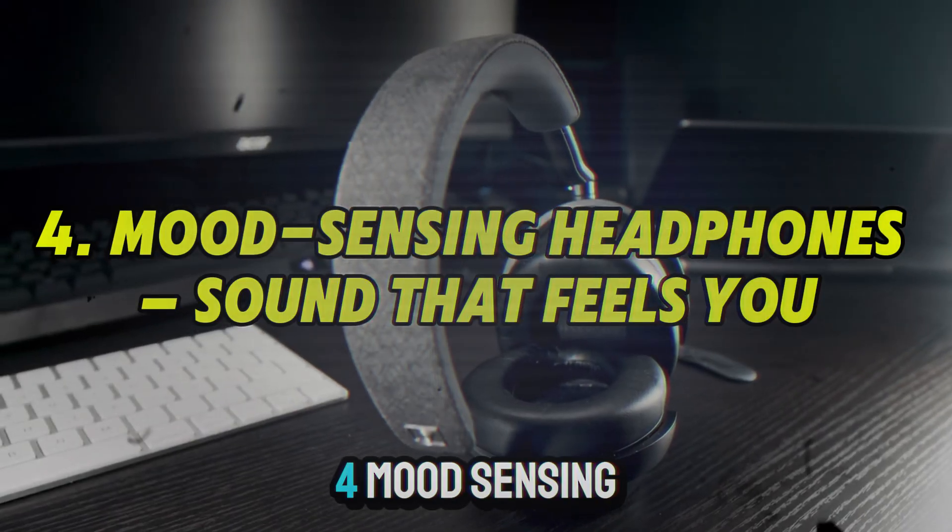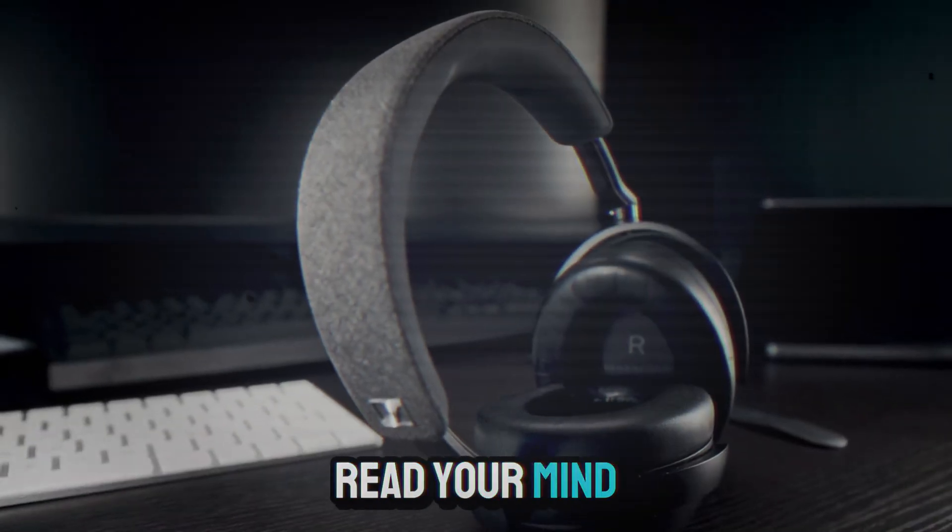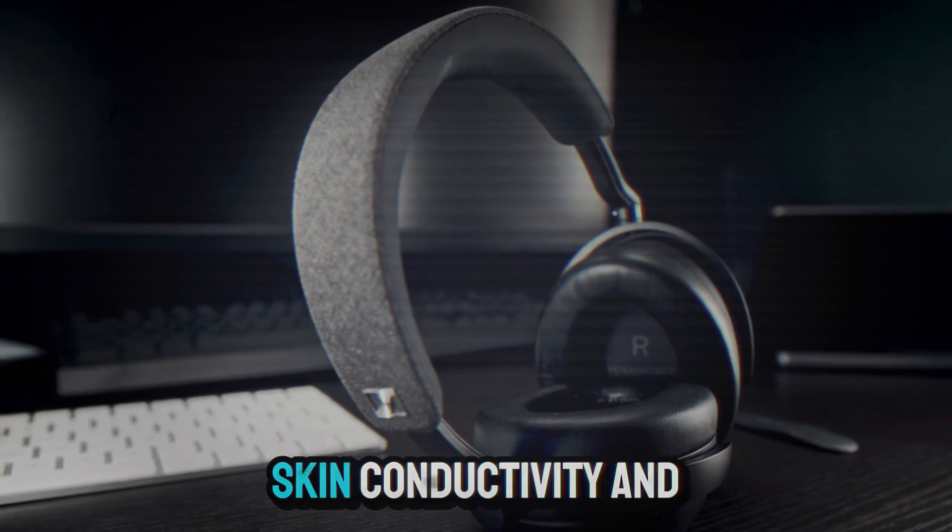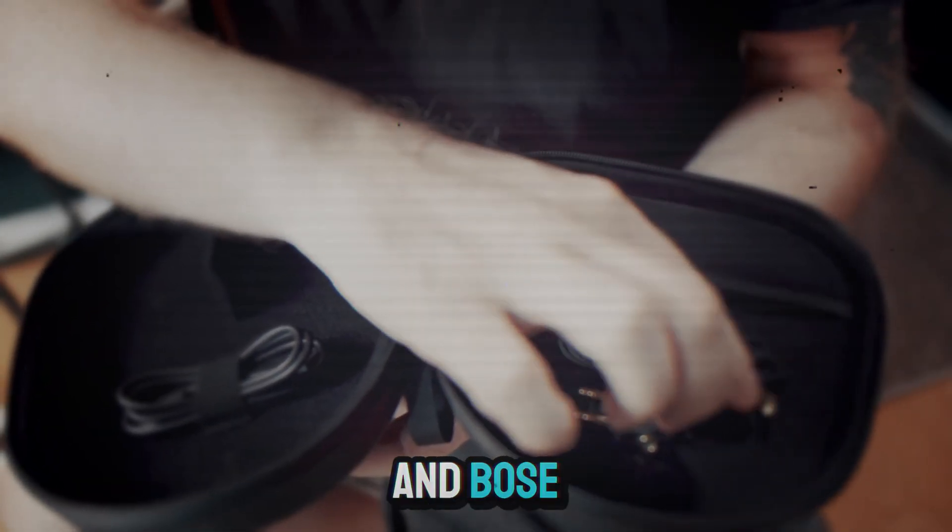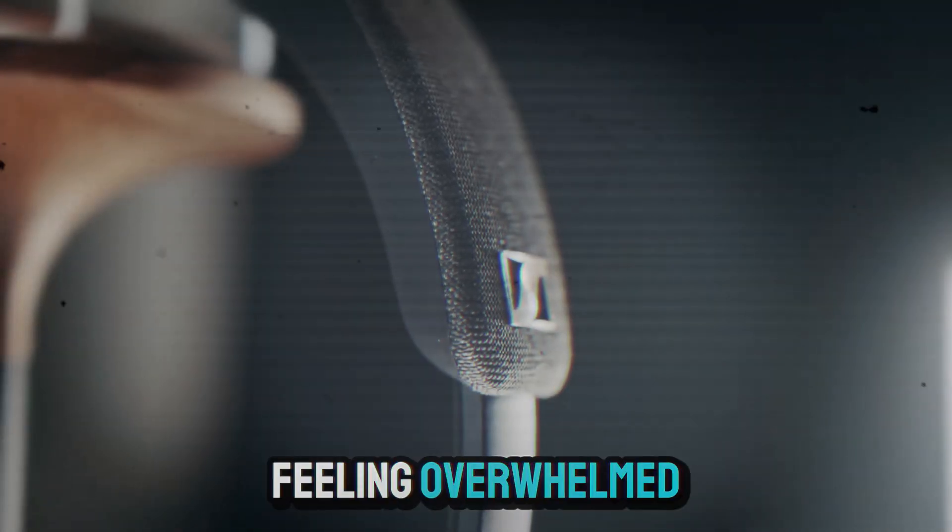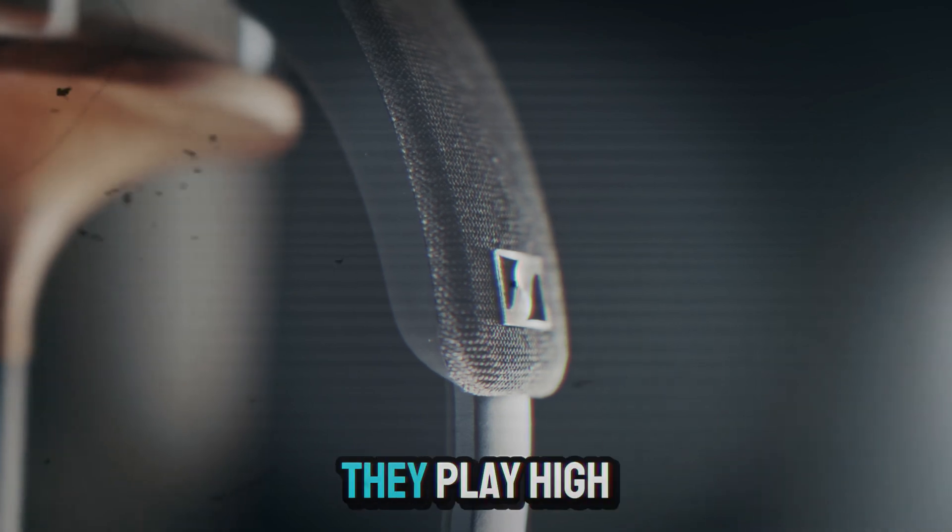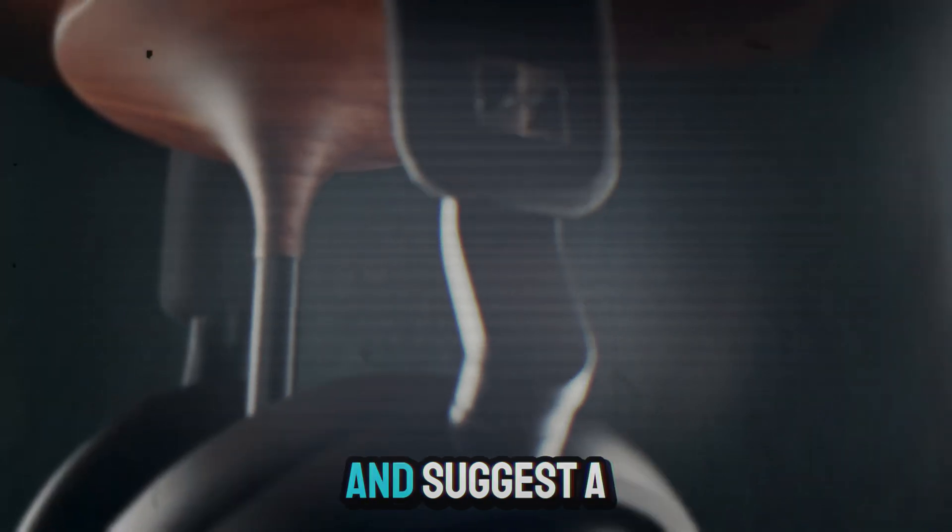4. Mood sensing headphones. Sound that feels you. Headphones used to block noise. Now they can read your mind. Using EEG sensors, skin conductivity, and pulse tracking, companies like Neurable and Bose have created headphones that adjust audio based on your emotional and cognitive state. Feeling overwhelmed? They lower the tempo. Focused? They play high-efficiency beats. Mentally fatigued? They pause playback and suggest a break.